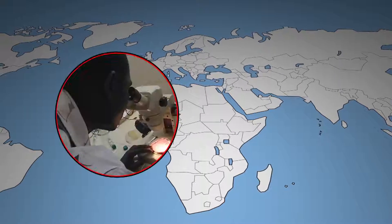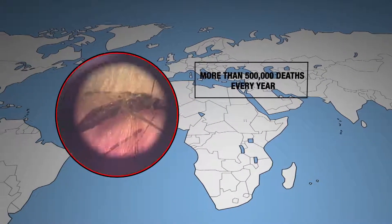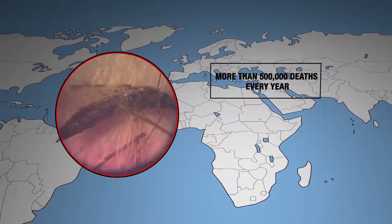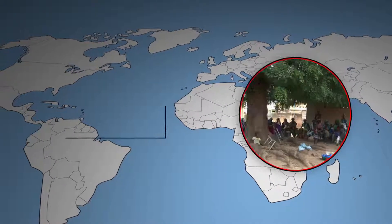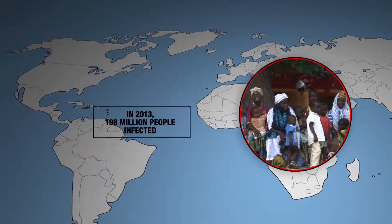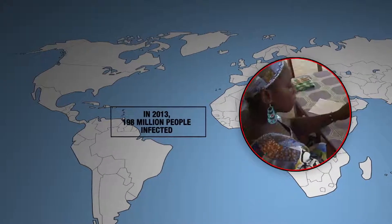Malaria, which causes the death of over 500,000 people a year, is the world's principal parasitic disease. In 2013, 198 million people were infected, most of them in poor countries.